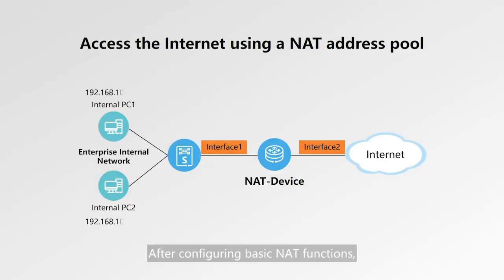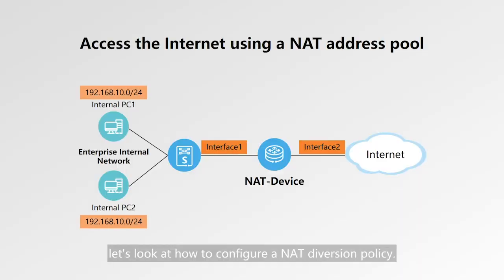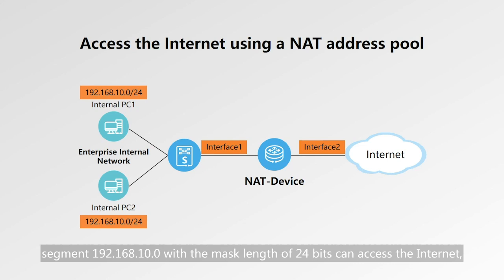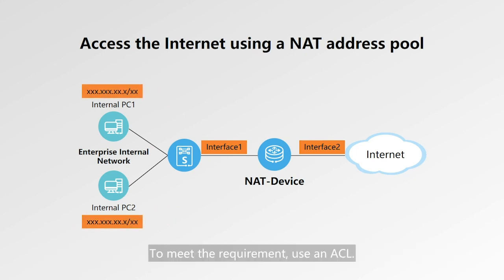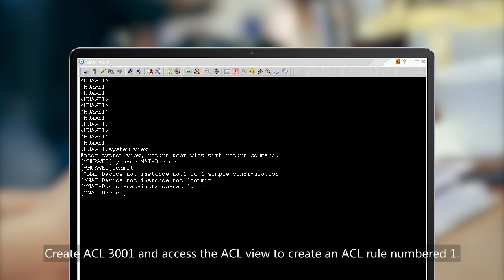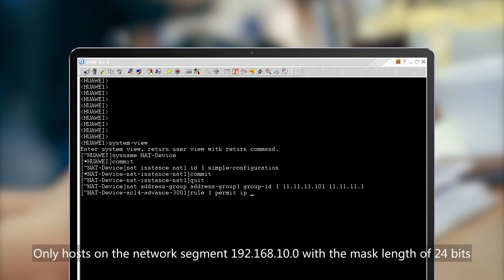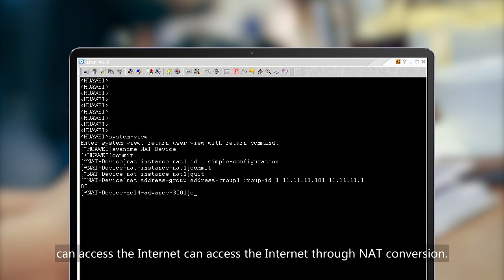After configuring basic NAT functions, let's look at how to configure a NAT diversion policy. The company wants to allow PCs on the network segment 192.168.10.0 with a mask length of 24 bits to access the Internet. To meet this requirement, use an ACL. Create ACL 3001 and access the ACL view to create an ACL rule numbered 1. Only hosts on the network segment 192.168.10.0/24 can access the Internet through NAT conversion.